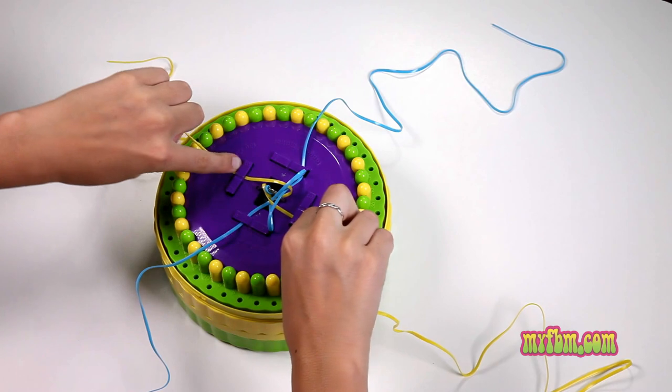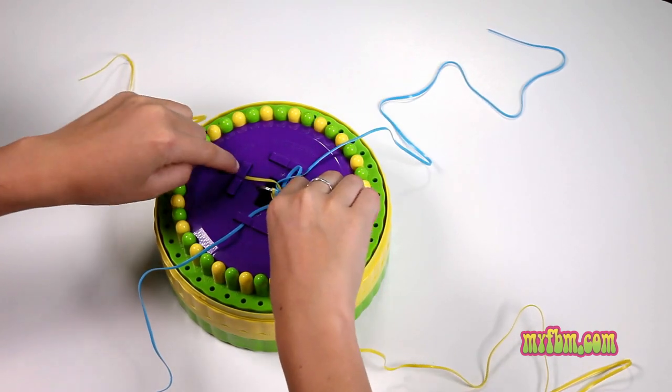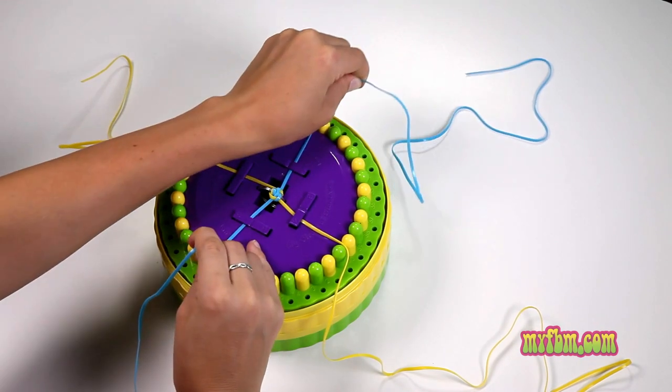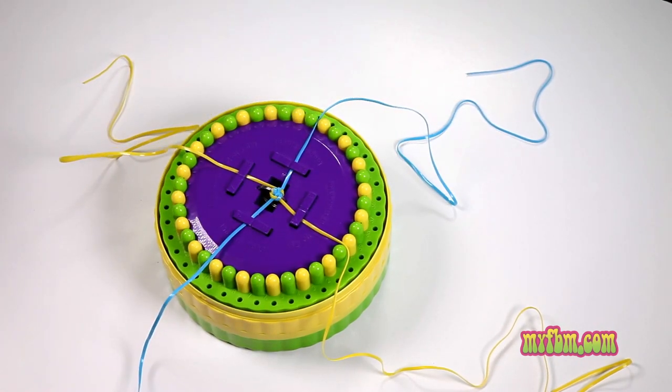Pull the yellow strings tighter and then you can pull the blue strings tighter. Now you've just made your first box knot.